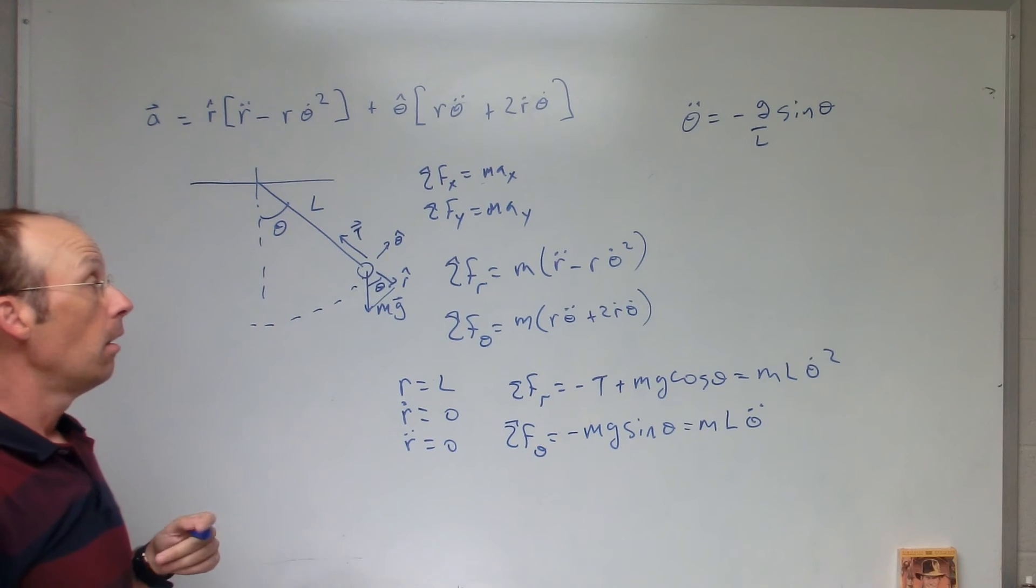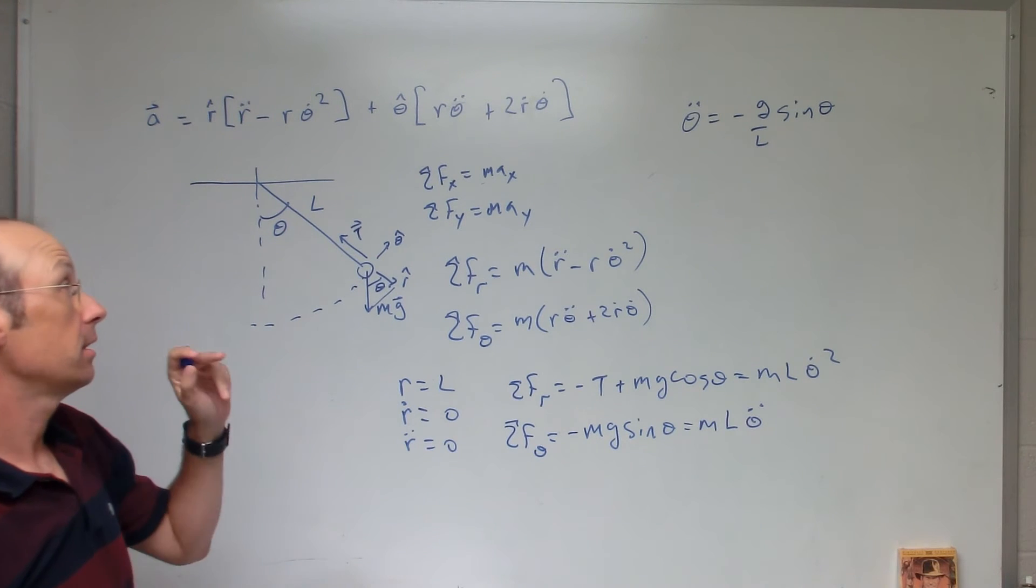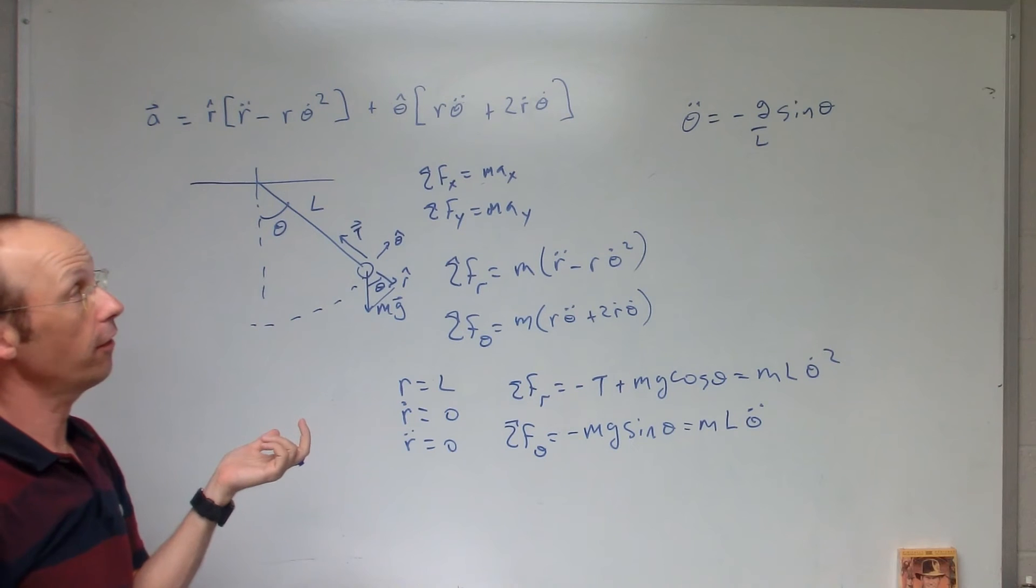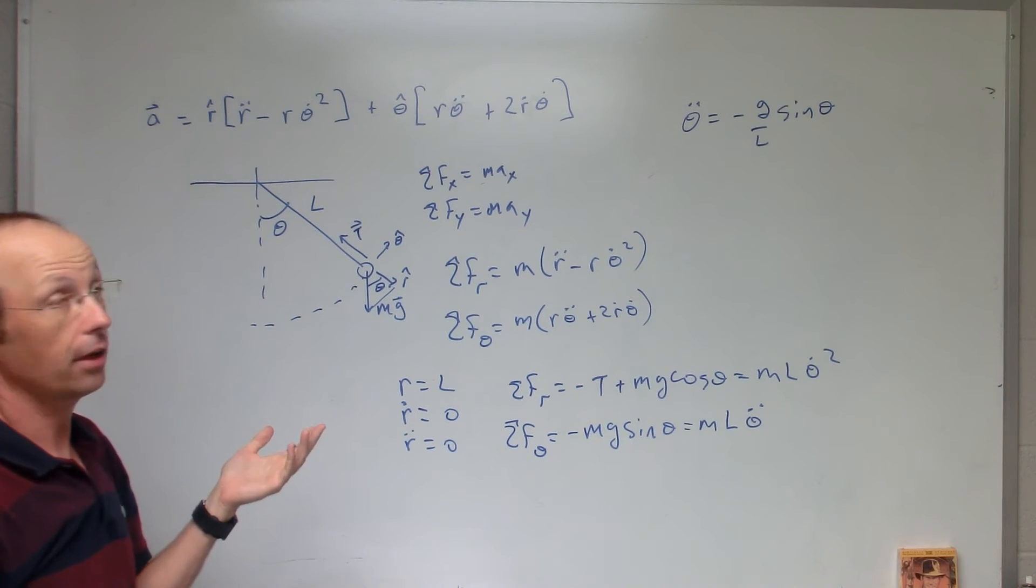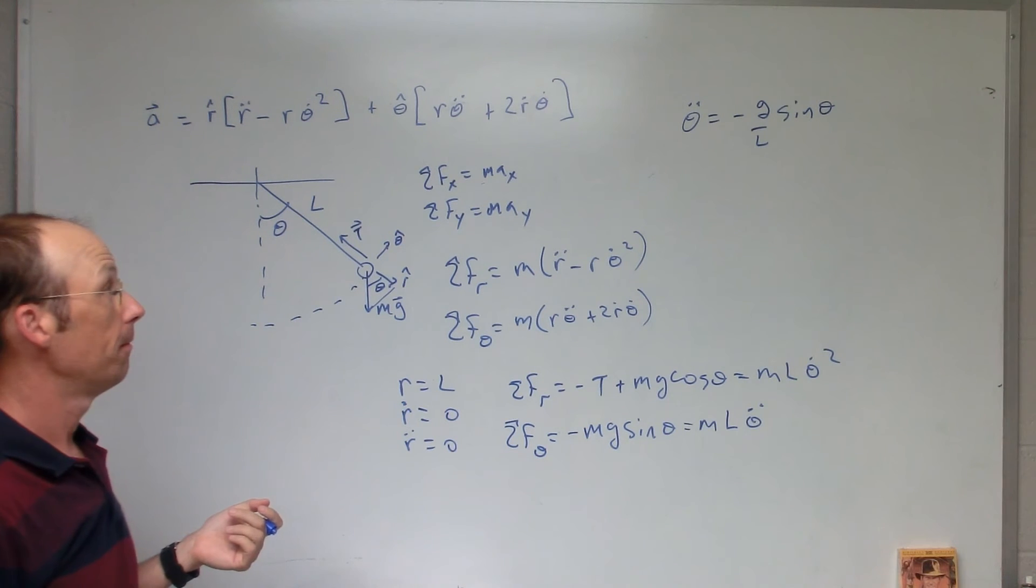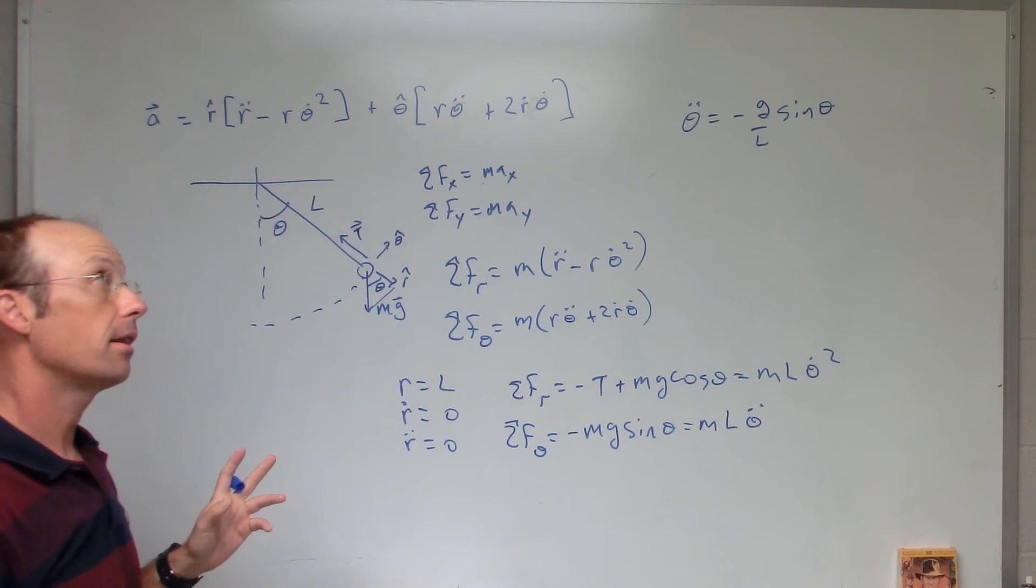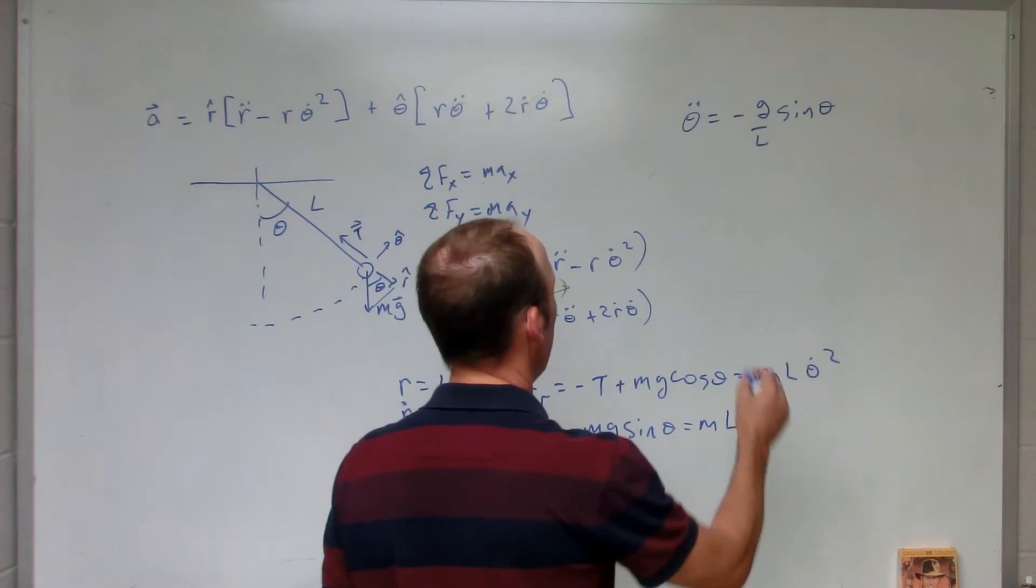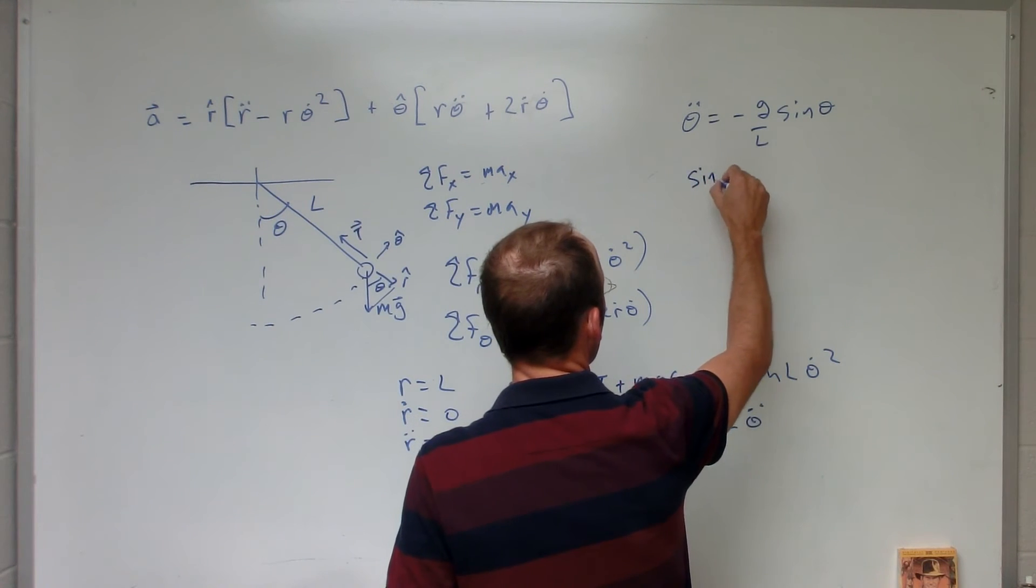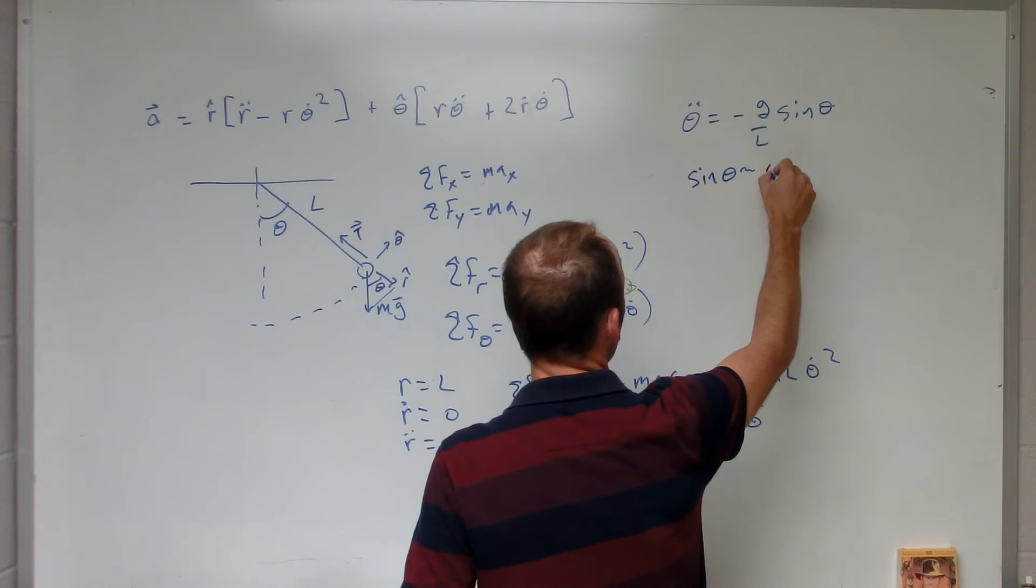Okay. That says, through some function, I take the derivative of it twice, and I get negative sine theta back. Yeah. The easiest way to solve this is to make the approximation that theta is very small, so sine of theta is approximately equal to theta.